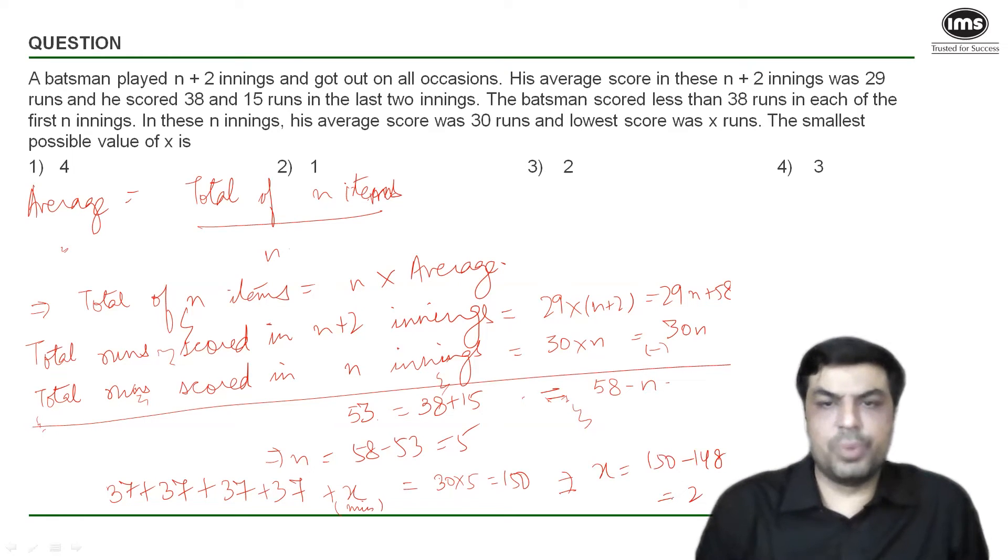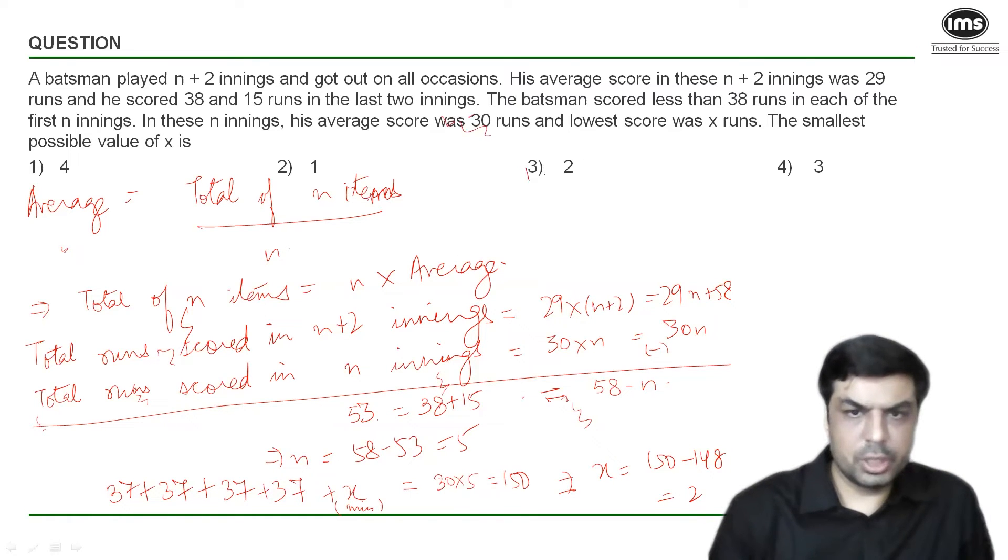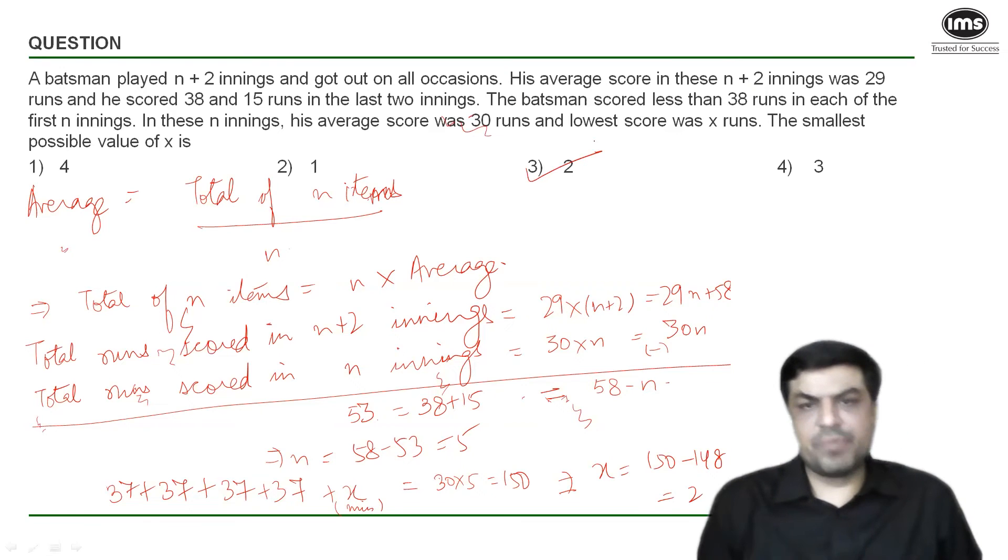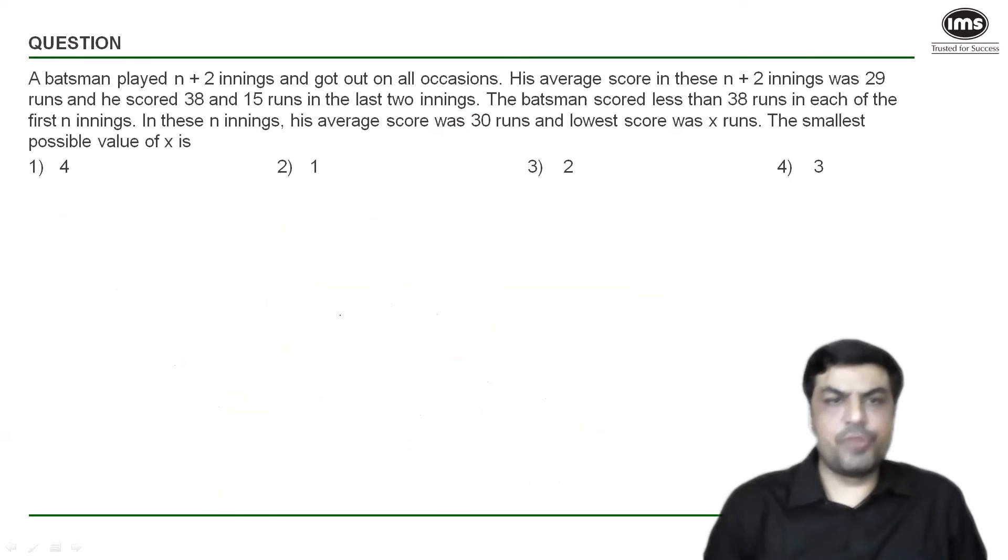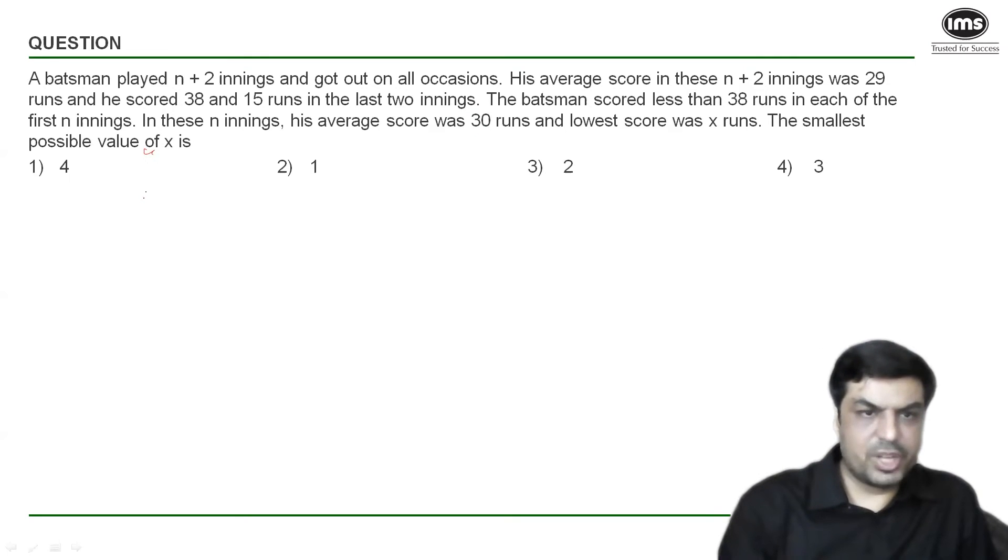Which means the lowest possible score in one of the five innings that he played earlier is two runs if he scores maximum possible in the remaining innings, so two is my answer. This is one way of solving this question, let us look at another way of solving the same question. If you notice we know the average after n plus two innings, we know the average after n innings and we can also find the average in the last two innings because the scores are known.